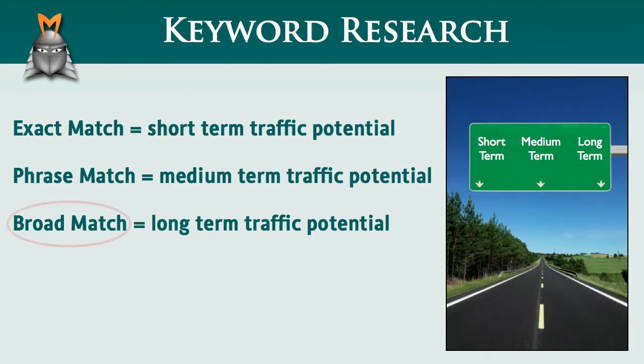The reason that we use broad match as a default is because most people use this information to assess the long term feasibility of creating a business in a particular niche. When you are trying to decide whether or not a particular niche is worth targeting, the most relevant traffic factor is the long term traffic potential of the keywords you are exploring. By assessing the long term traffic potential in conjunction with other factors such as commerciality, you can then decide whether or not it is worth putting in the time and effort necessary to move forward with your business idea.